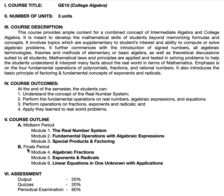We have a midterm period and a finals period. For the midterm: Module 1 is the Real Number System, good for two weeks. Module 2 is Fundamental Operations with Algebraic Expressions, also two weeks. At the end of Module 2, there will be a long quiz number one, which summarizes Modules 1 and 2. Module 3 is Special Products and Factoring, worth four weeks.